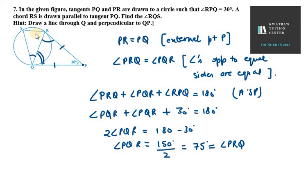...and angle SRQ will be equal by the alternate segment theorem of a circle. So angle PQR equals angle SRQ, which is 75 degrees, by the alternate segment of a circle.